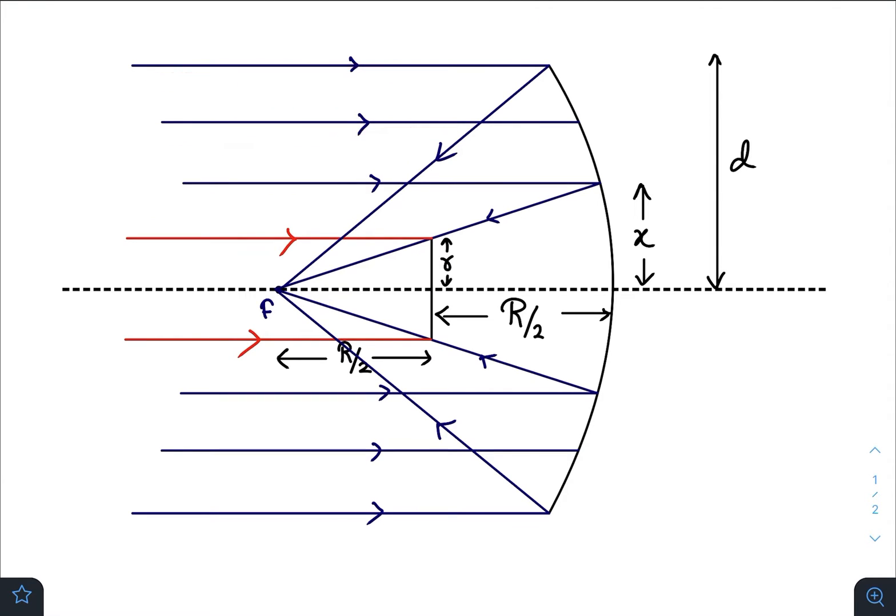These lines, both blue and red, indicate the incident rays. Let me consider that P naught amount of power is being incident on the whole concave mirror.